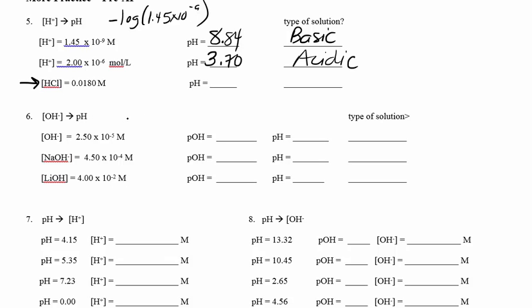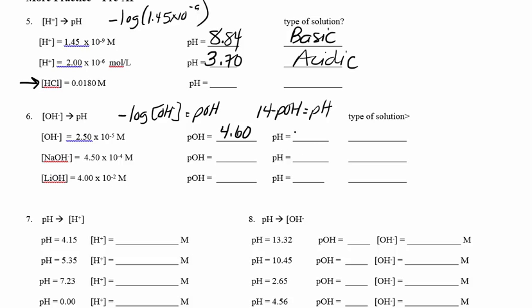For OH to pH with non-round numbers: take the negative log of OH to get pOH first, then do 14 minus pOH. Negative log of 2.5×10⁻⁵ gives 4.60, and 14 minus 4.60 equals 9.40 — that's a basic solution. For sodium hydroxide: negative log of 4.5×10⁻⁴ gives pOH of 3.35, so pH is 10.65, which is again basic.